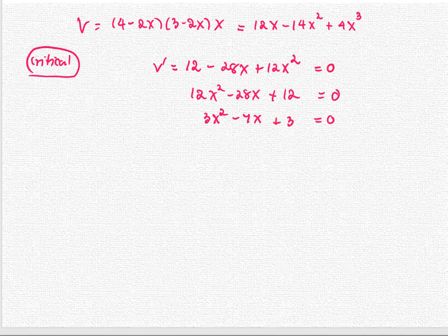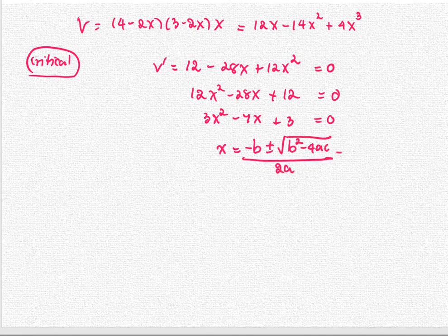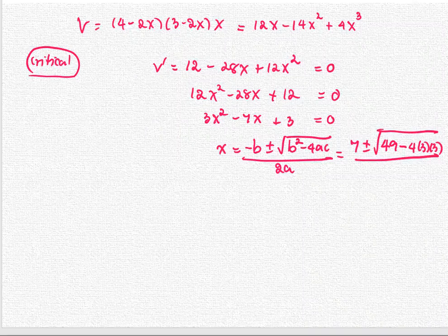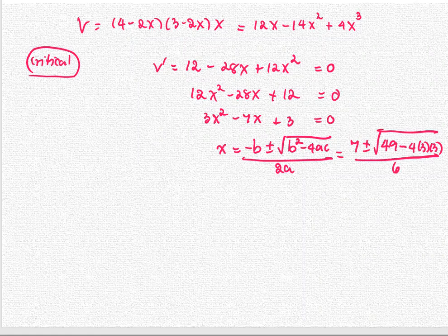It doesn't look factorable, so we use the quadratic formula to find x. Negative b is negative of negative 7 or 7, plus minus square root of 49 minus 4 times 3 times 3, all divided by 6. We get x equals 0.5657.